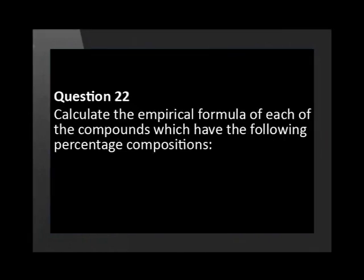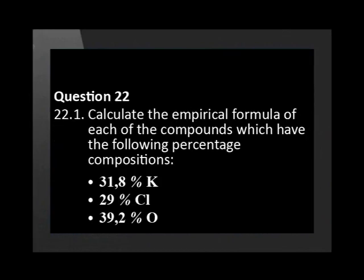Calculate the empirical formula of each of the compounds which have the following percentage compositions: 31.8% potassium, 29% chlorine, and 39.2% oxygen; 30.4% nitrogen and 69.6% oxygen.